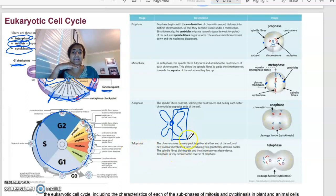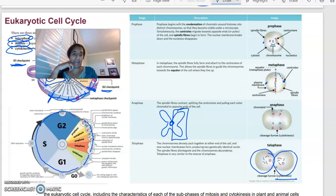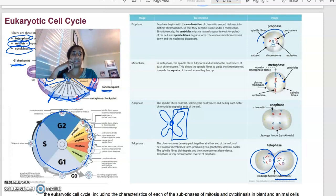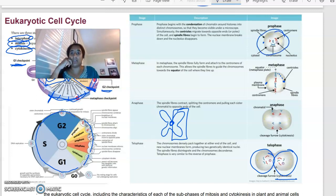And then telophase is where the chromosomes densely pack together again at either end of the cell. And a new nuclear membrane is going to form. And you can see that cleavage starting to happen, which is where cytokinesis is going to occur and split it into two identical cells. So these two cells at the end, once cytokinesis has happened, is going to be identical to the cell that we started off with at the beginning.